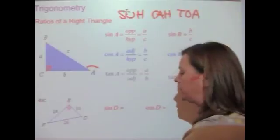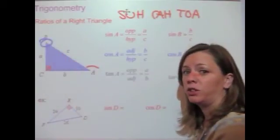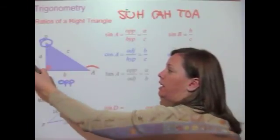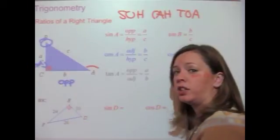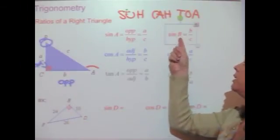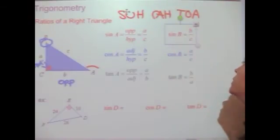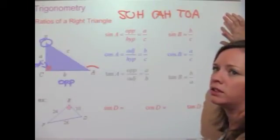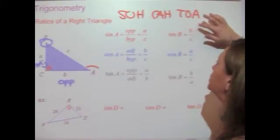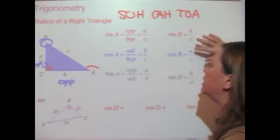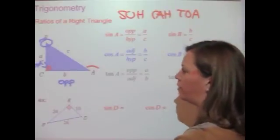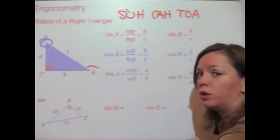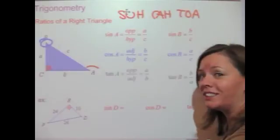If we switch to looking at angle B, those ratios change. For angle B, side b is opposite and side a is adjacent. So the sine of B equals b over c, the cosine of B equals a over c, and the tangent of B equals b over a.